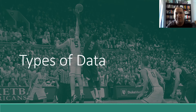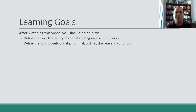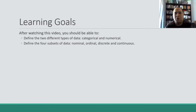Hi students, in this video we are going to look at the different types of data — what they are and how they're used. After watching this video you should be able to define the two different types of data: the main two types, that's categorical and numerical. You should also be able to define and identify data from the four subsets of those two main types: nominal, ordinal, discrete, and continuous data.